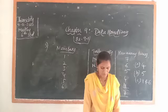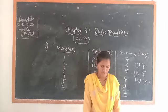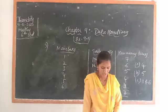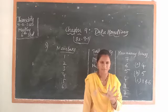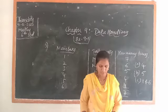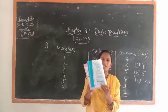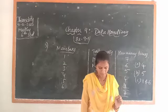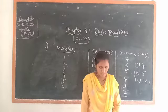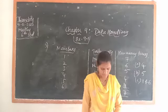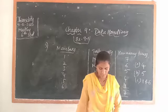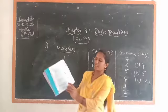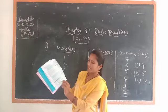Question 4: The following pictograph shows the number of tractors in 5 villages. Draw it in your notebook. Villages A to E are given, with each tractor picture representing 1 tractor. Count: Village A has 6 tractors, Village B has 5, Village C has 8, Village D has 3, Village E has 6. Write these numbers in front of each village.